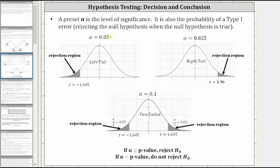For the right-tailed test, alpha equals 0.025. The z-score is 1.96. The area shaded to the right of the z-score is the rejection region, which has an area equal to 0.025. For the two-tailed test, to find the areas on the left and right, we do have to divide alpha by two. 0.1 divided by two gives us 0.05.